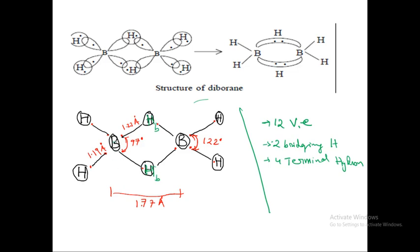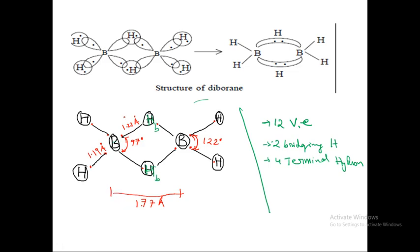Boron has three valence electrons: one, two, three. The other boron also has one, two, three valence electrons — that's six. All six hydrogens carry one electron each: one, two, three, four, five, six. So you have 12 valence electrons total.